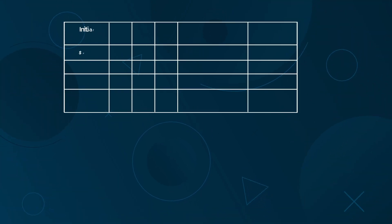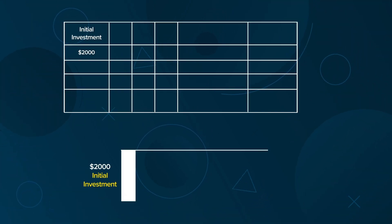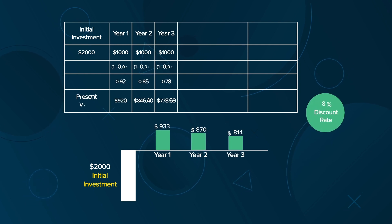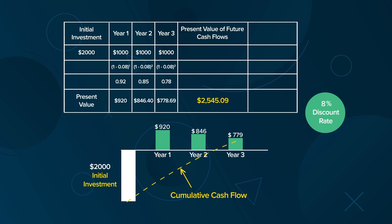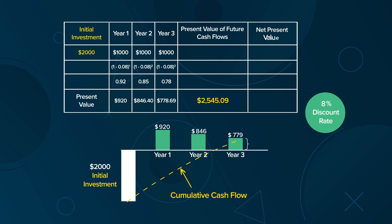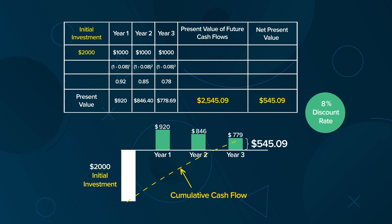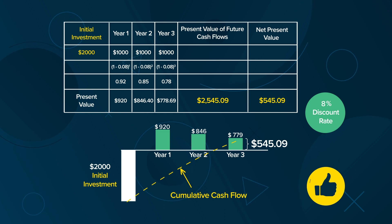If a company invests $2,000 into a project which offers $1,000 for three years at an 8% discount rate, the present value of future cash flows is $2,545.09. After subtracting the initial investment, the Net Present Value of the project is $545.09, suggesting this is a good investment at the current discount rate.